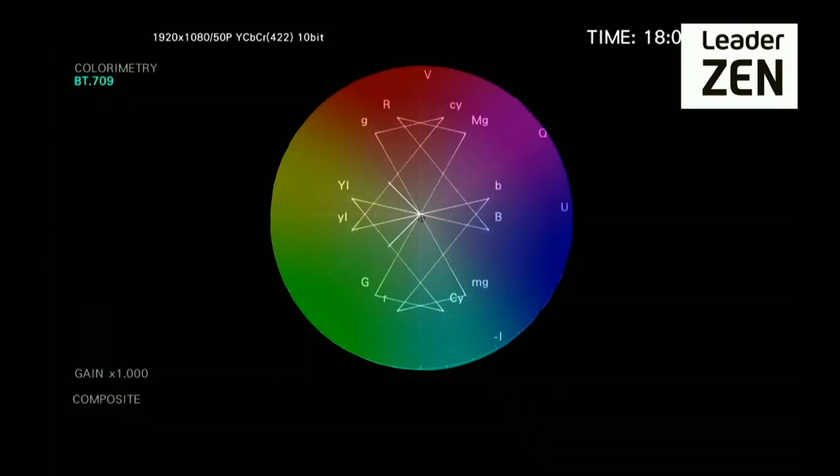But hold on a minute. Doesn't the vectorscope display hue and saturation? So if that's the case, can't we use the vectorscope display to correctly adjust the image for skin tone?